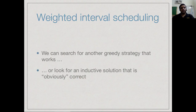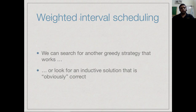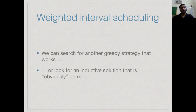One strategy is to search for another greedy strategy and try to argue that it works — but as we saw, arguing correctness takes effort using an exchange argument or similar proof. The other approach, which we will look at in more detail in the next few lectures, is to find an inductive solution which is obviously correct but can be evaluated efficiently. We will in some sense look at every case, but in a clever way — that is what dynamic programming does.